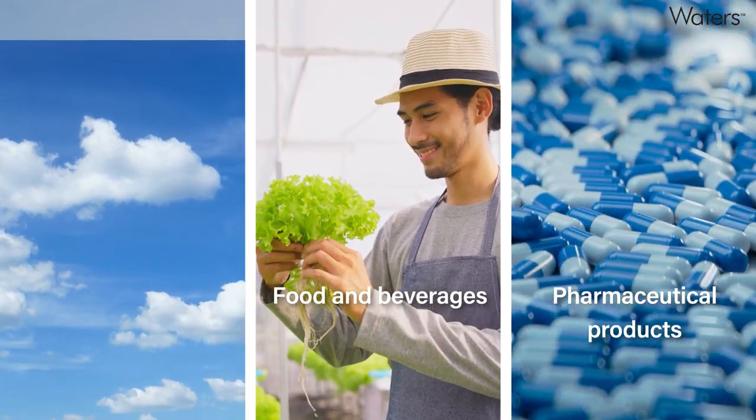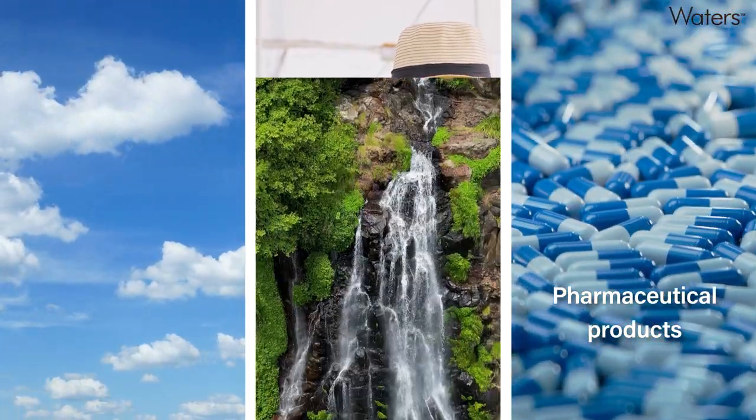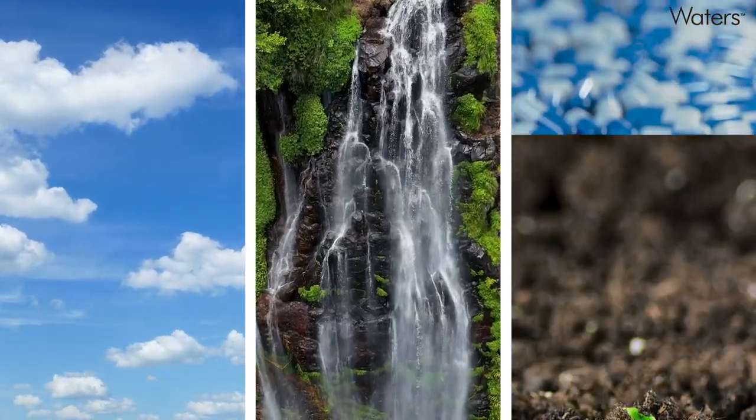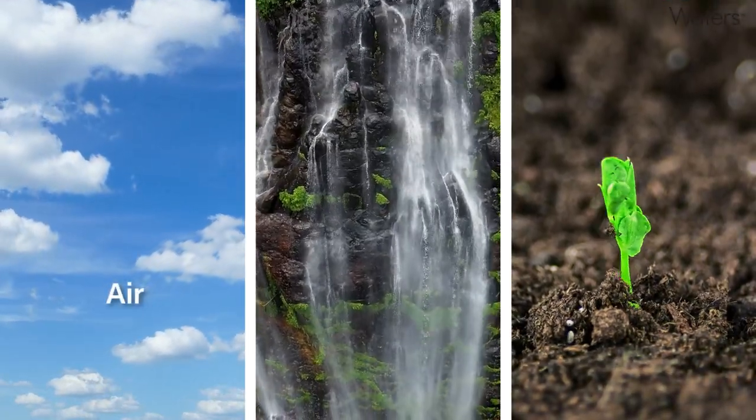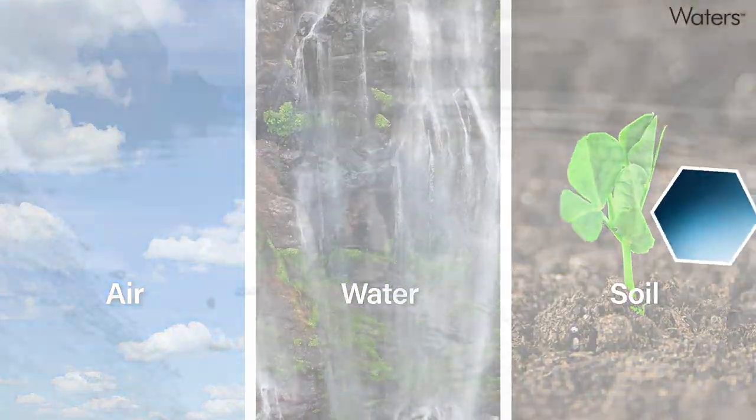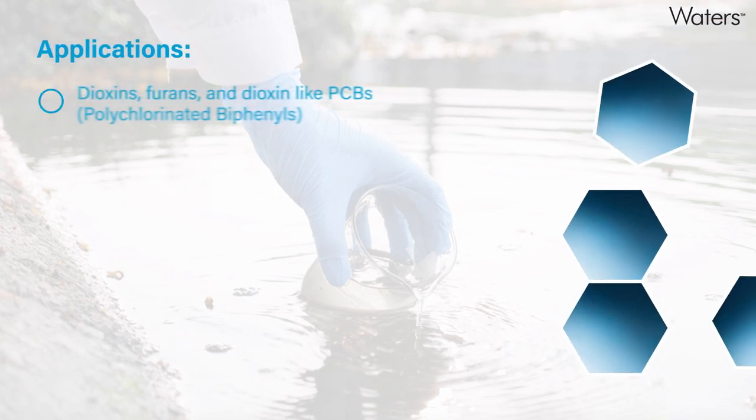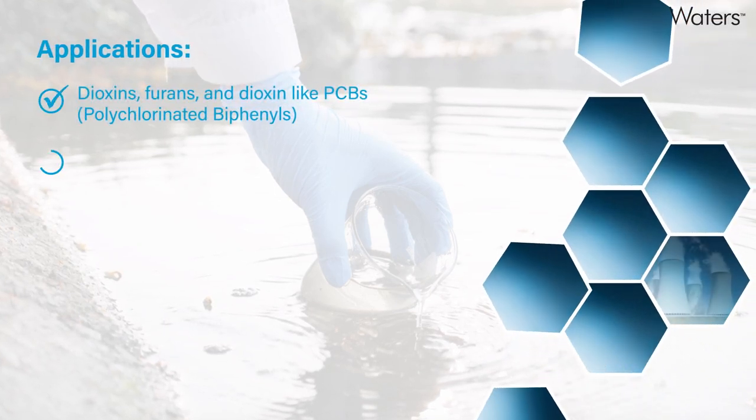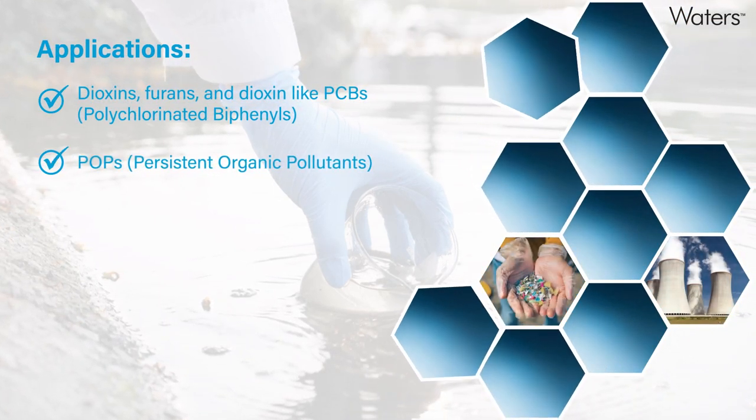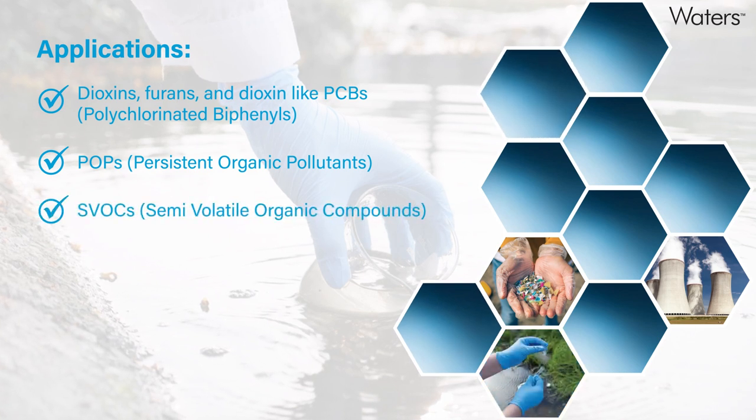The use of GC-MS-MS in environmental analysis makes it possible to monitor and regulate pollutants in air, water, and soil. It can be used to identify and quantify dioxins, persistent organic pollutants, and semi-volatile organic compounds.